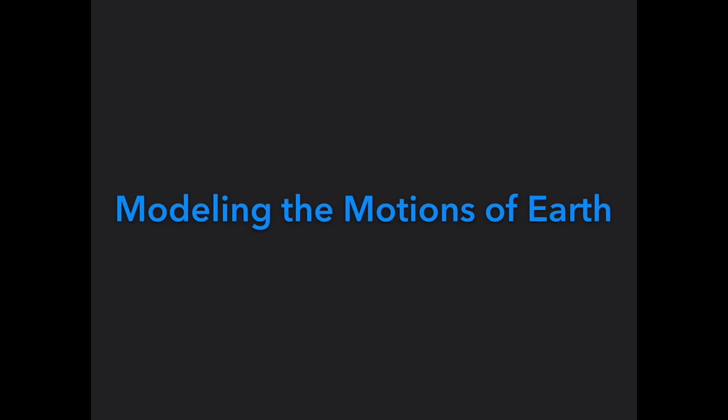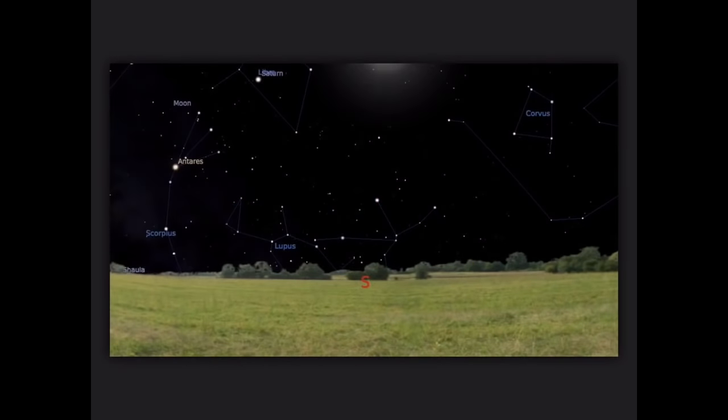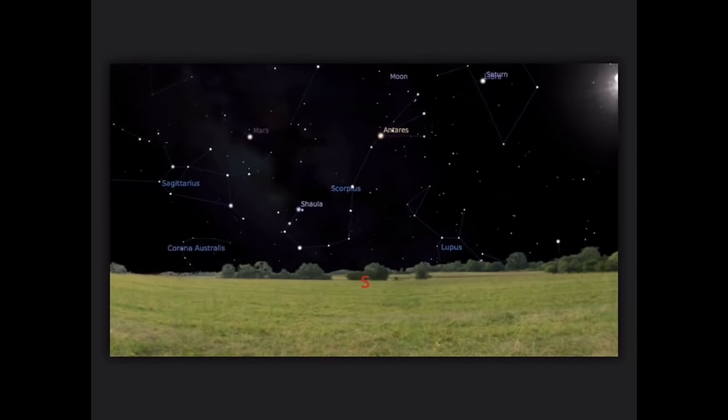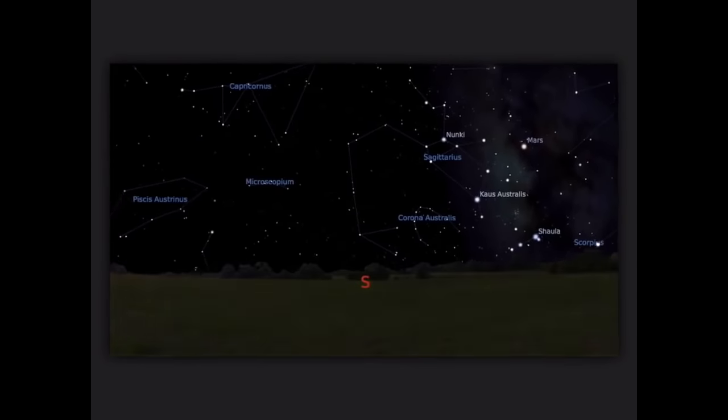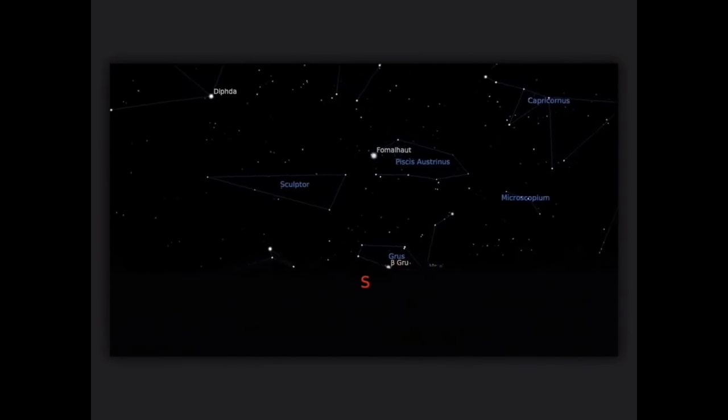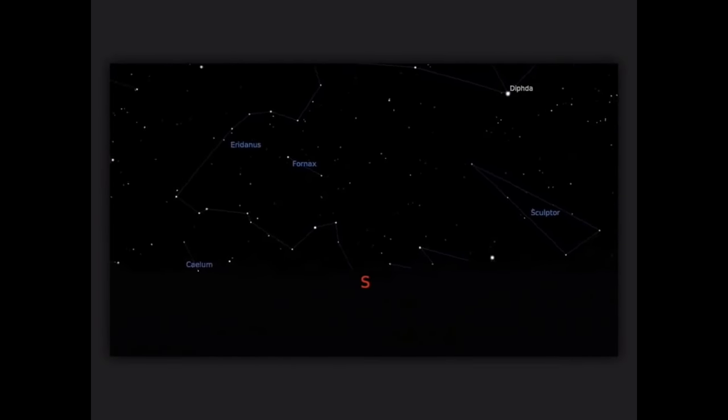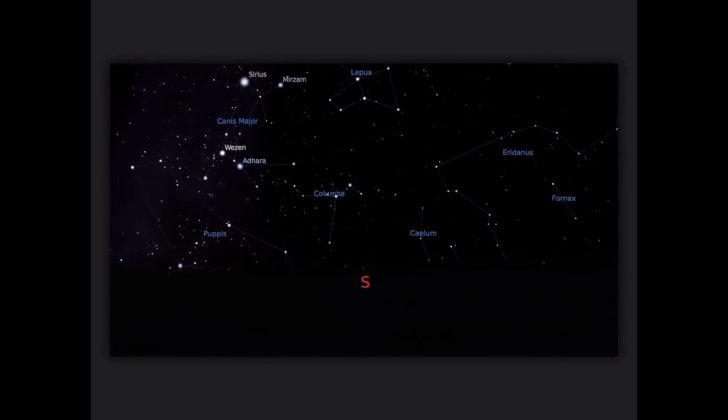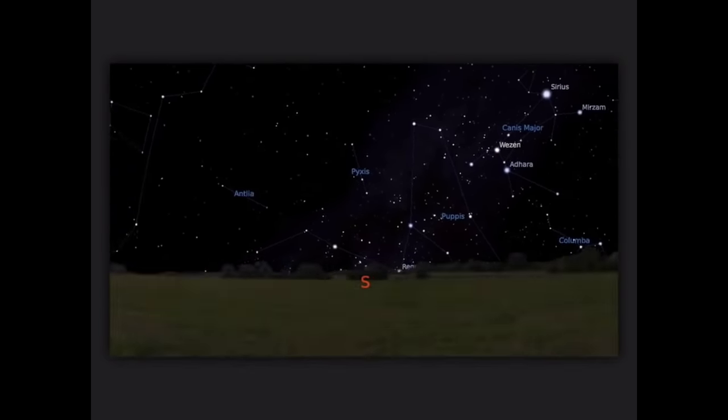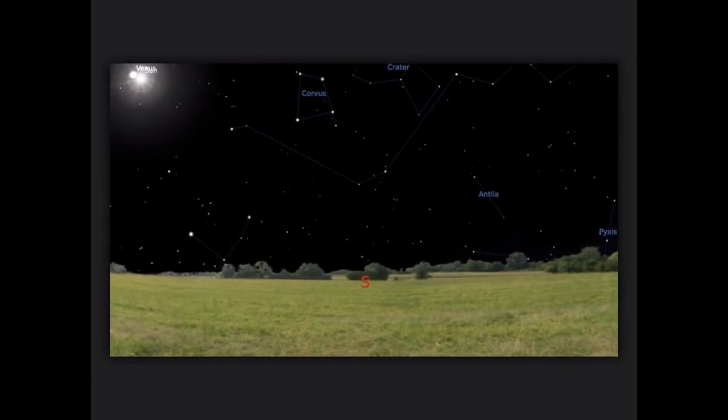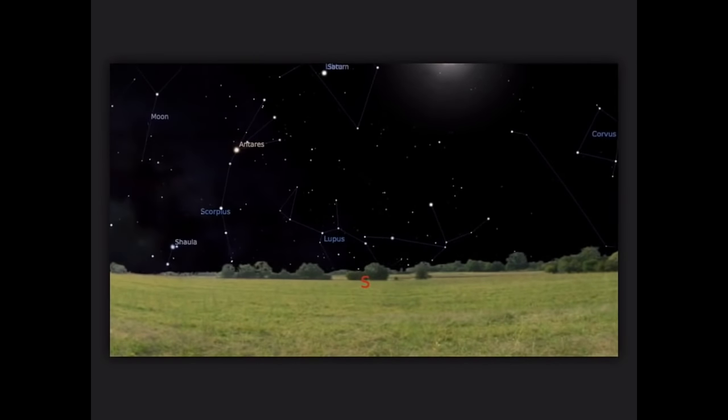Modeling the motions of Earth. If I asked you to go outside tonight and observe the night sky on a clear night, this is what you would see: the motion of the moon, the stars, maybe some planets. As you watch their positions over time, they appear to move across the sky.